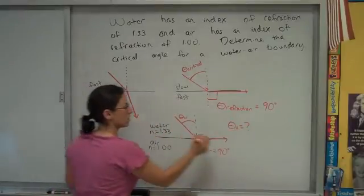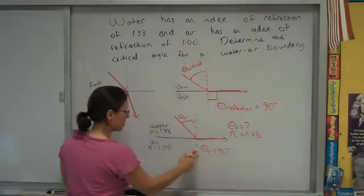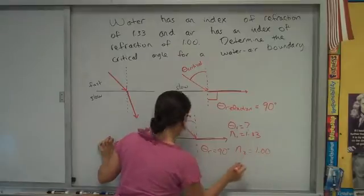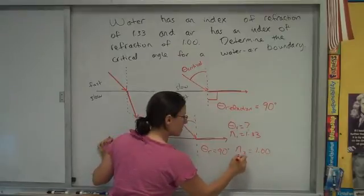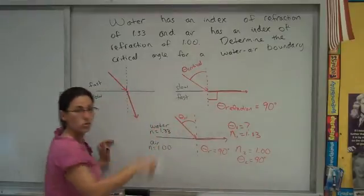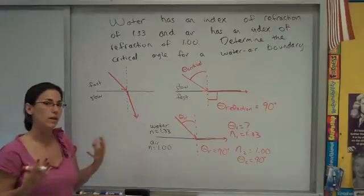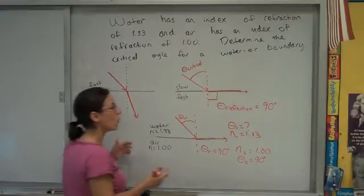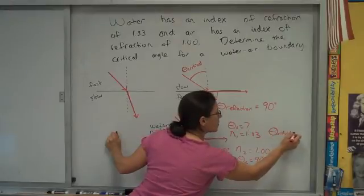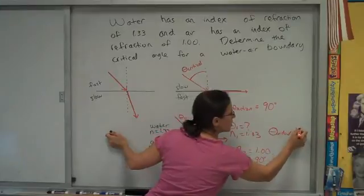I know my first n, I know my second n value, and I know my second angle value. When you substitute all of this into Snell's law, n1 sin theta1 equals n2 sin theta2, the critical angle for the water-air boundary works out to be 48.6 degrees.